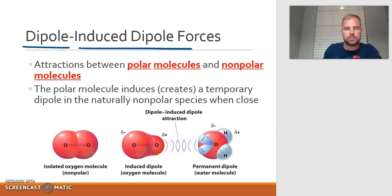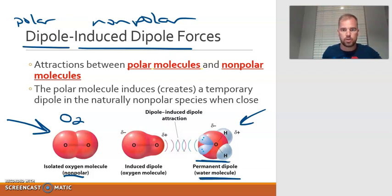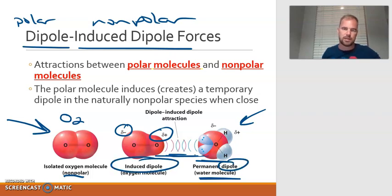Finally, we have dipole-induced dipole. This is an attraction between a polar molecule and a nonpolar molecule. Same idea as before - the polar molecule has the permanent separation of charge. When it gets close to the nonpolar molecule, it induces a temporary dipole. For example, here's shown an oxygen molecule, which is nonpolar. But if a water molecule, which is polar, gets close, it creates that temporary dipole in the oxygen. That attraction is known as a dipole-induced dipole attraction - between polar and nonpolar molecules.